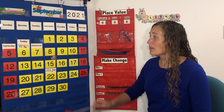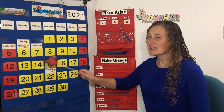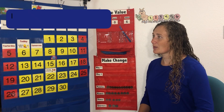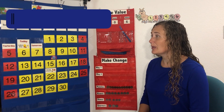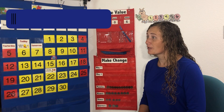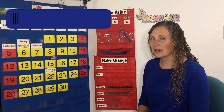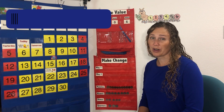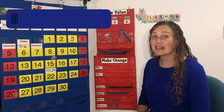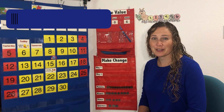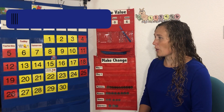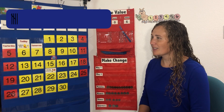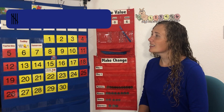Today's number is the number 6. Let's make 6 tally marks. 1, 2, 3, 4 — when we get to 5, we make a slash across the other 4. That helps us remember that that is a group of 5. We already have 4 tallies, then 5 — the slash across.